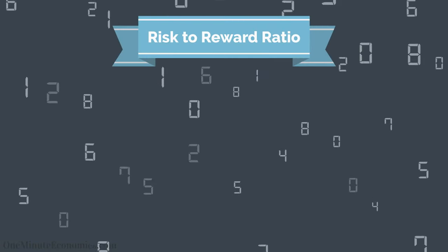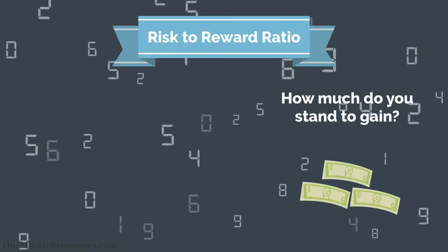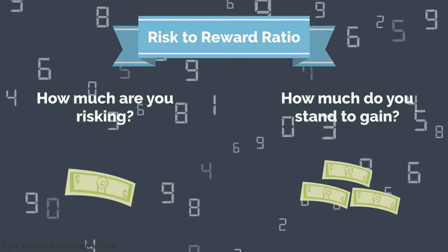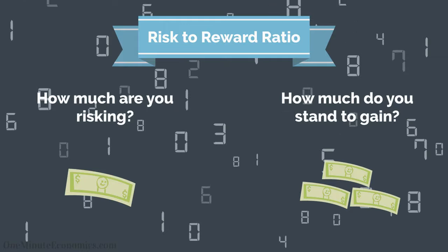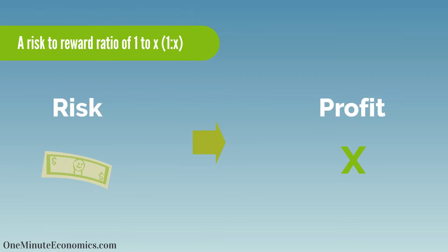The risk-to-reward ratio tells you how much you stand to profit for every unit of currency you risk. A risk-to-reward ratio of 1 to X tells us that for every dollar you risk, you stand to generate a profit of X dollars.